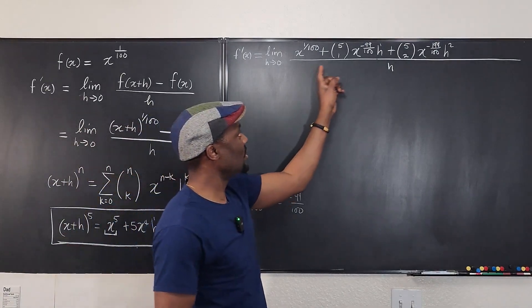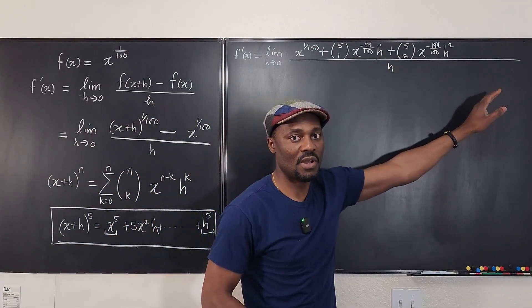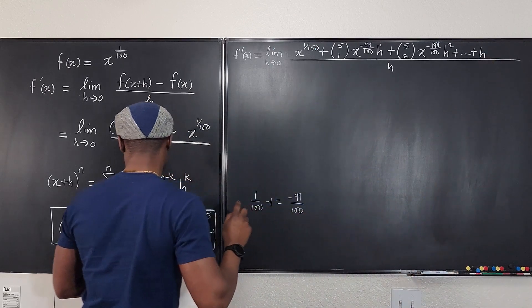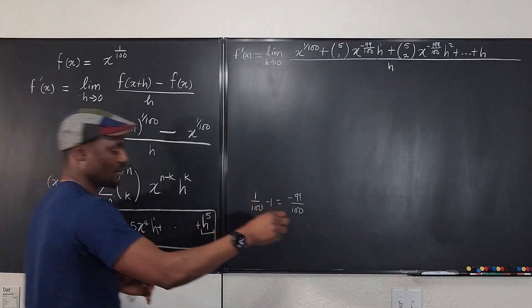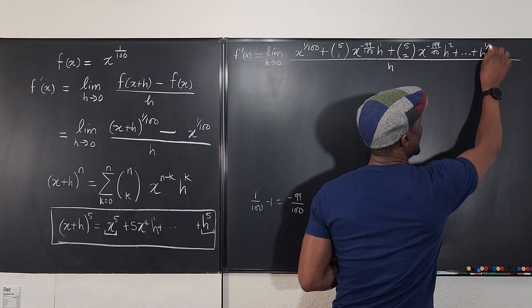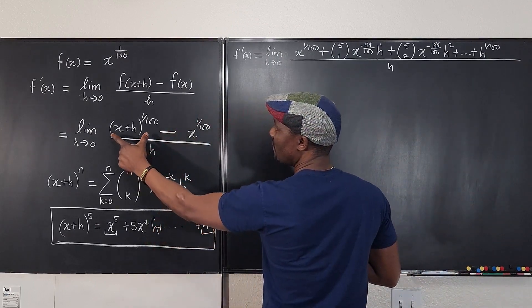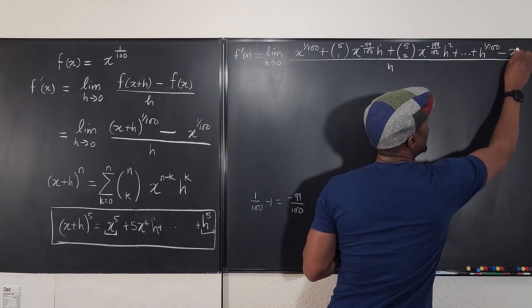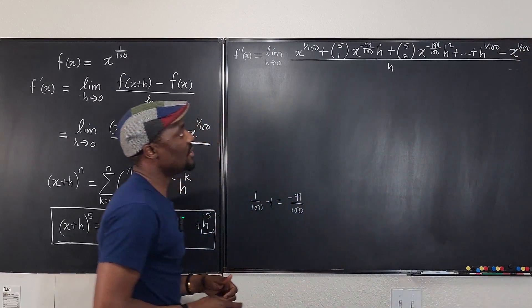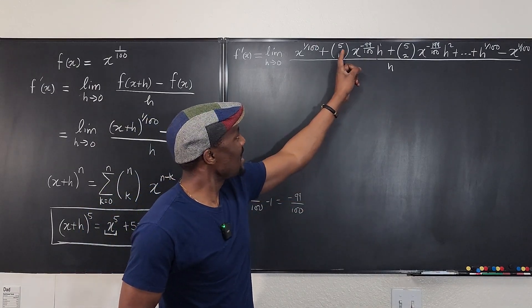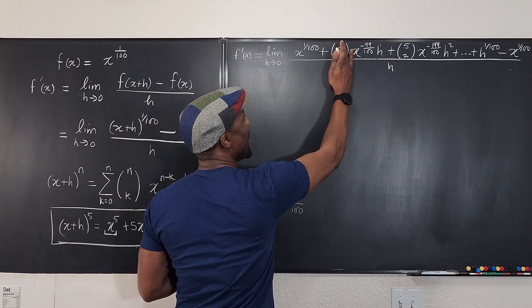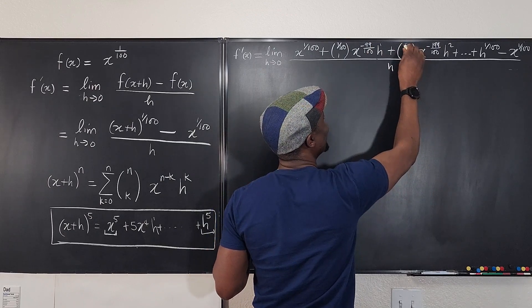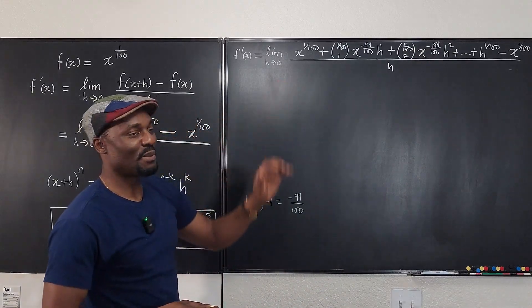All terms from the second onward contain h. On the top we also have minus x to the one over 100, and everything is divided by h. Note that I mistakenly wrote five earlier — it should be one over 100 throughout. Now, one over 100 choose one is simply one over 100, since in how many ways can you choose one thing from one over 100? It's just one over 100. The x to the one over 100 terms cancel with the minus x to the one over 100.